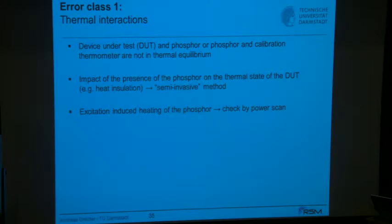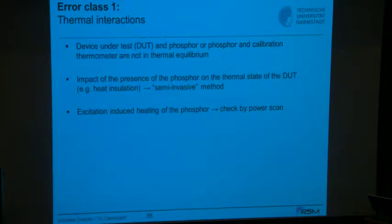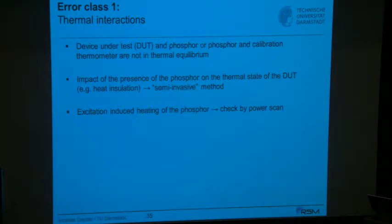Error class one is heat transfer. The phosphor coating and the calibration thermometer may not be in thermal equilibrium, and the phosphor and substrate may not be in equilibrium during strong temporal variations. If you have a phosphor made of ceramics, even a 10-micron-thin coating acts as heat insulation. In that sense it is not a non-intrusive method — I call it semi-invasive — and this matters most if you have fast changes in surface temperature.